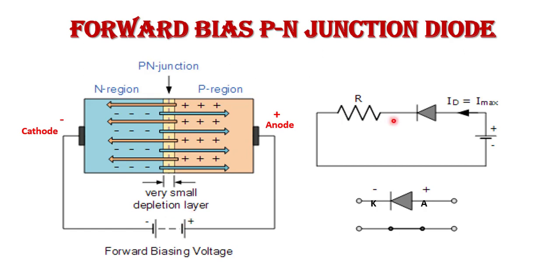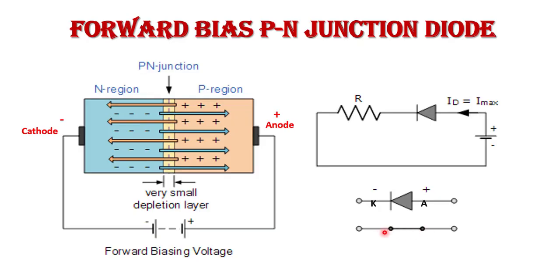In the circuit diagram, a resistor is connected in series with the diode. This is a current-limiting resistor — when the diode starts conducting, this resistor limits the flow of current. In case of forward bias, the diode behaves like a closed switch.